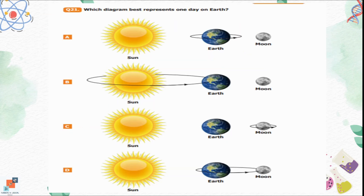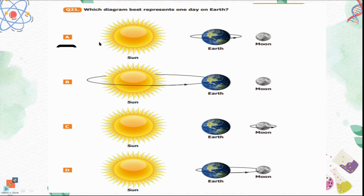Question 21: Which diagram best represents one day on Earth? Day and night change when Earth rotates on its axis. Option A shows Earth rotating on its axis. Option B shows Earth rotating around the Sun. Option C shows the Moon rotating on its axis. Option D shows the Moon rotating around Earth. Option A is the correct representation because Earth rotating on its axis causes day and night.